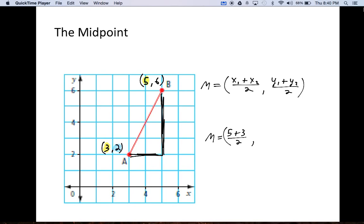And then our y's we're going to add together and do the same thing. Here's our first y. Here's our second y. It actually doesn't matter what you call the first y or the second y as long as you keep it same for the x's. So we add 2 plus 6, divided by 2.